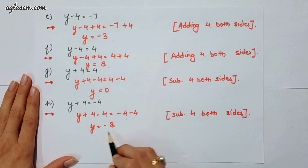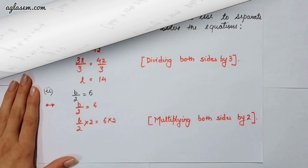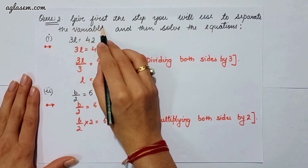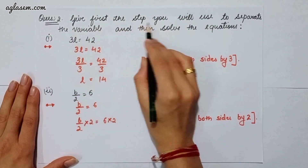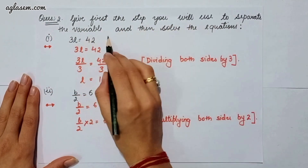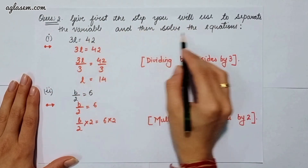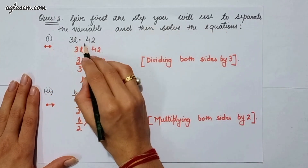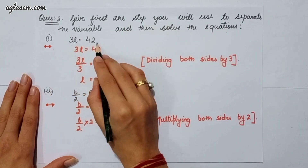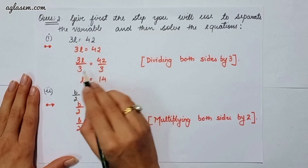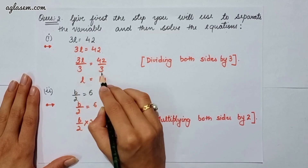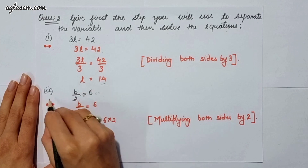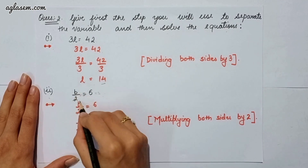Moving to question number 2, which says: give first the step you will use to separate the variable, and then solve the equations. The first part says 3l is equal to 42. We have to divide both sides by 3, so l will be 14. The second part says b divided by 2 is equal to 6. Here we have to multiply both sides by 2.